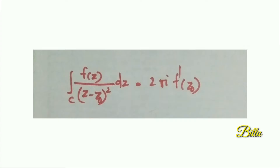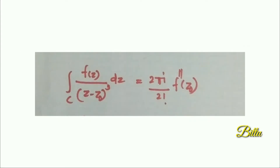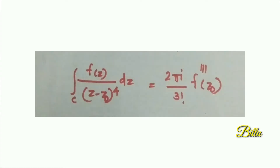...is given by 2πi·f′(z₀), where f′(z₀) is the first derivative of f at z₀. Next, suppose the power is 3, then the integral over C of f(z) by (z minus z₀)⁴ dz equals 2πi divided by 2 factorial times f″(z₀). Similarly, the integral over C of f(z) by (z minus z₀)⁴ dz equals 2πi divided by 3 factorial times f‴(z₀).